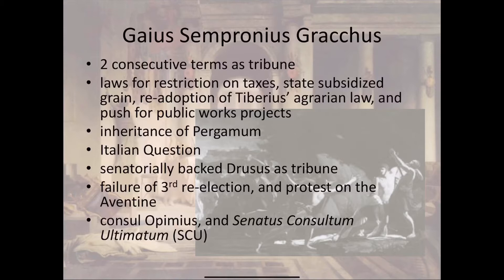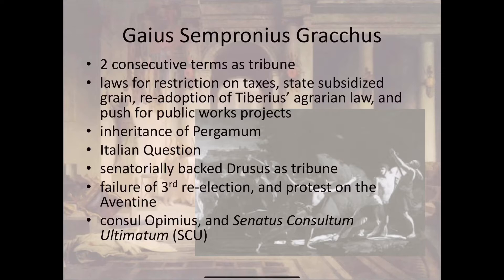Gaius didn't meet with as much resistance as his brother did — again, probably because the Senate felt bad about bludgeoning his older brother to death. But there were two big things the Senate did resist fiercely. One was Pergamum — in modern-day Turkey, or what the Romans called Asia Minor — where a king died and left land to the Roman government. The Senate wanted to control and distribute that land as they saw fit, but Gaius Gracchus wanted to seize it as part of the land redistribution plan and give it to the working class.